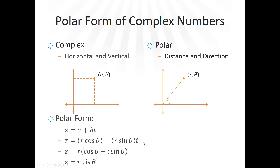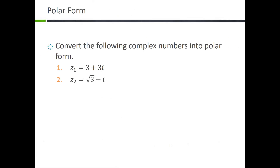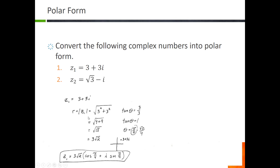To convert to polar form, we need r and theta. To find r, it's just the modulus of your complex number. To find the angle theta, we use tangent of theta equals b over a. Let's convert Z equals three plus three i. First, r equals the square root of three squared plus three squared, which gives three root two. We don't need plus or minus — we keep it as positive three root two.